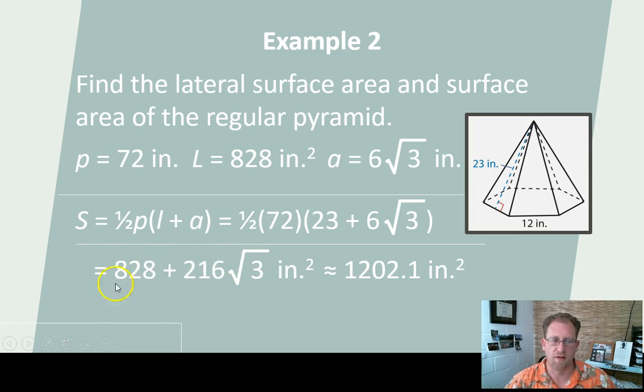But I can combine these and distribute that into that and then distribute that times that. And I get this. And if I want to simplify down into a decimal, I've got to use my calculator. And 828 plus 216 times the radical 3 is 1202.1 square inches. This would be an acceptable simplified binomial. That's fine. Or you can go to this as the decimal. Okay? Let me know if you have any questions about that. You don't have to write this slide down.